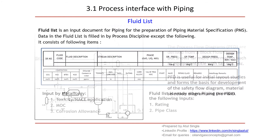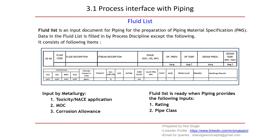Even process has only these BFDs before developing the P&IDs, so this is a very important document used in the initial stage of the project. The fluid list is another important document — it is an input document for piping for the preparation of piping material specifications (PMS). To start developing PMS, the first document is the fluid list. Data is filled in by process discipline. If you see this table, the fluid list contains: serial number, fluid code, fluid description, stream description, phase, operating temperature and pressure, design temperature and pressure, then composition — CO2, H2S, beta, H2O, chloride content, toxicity, maximum line size, material of construction, rating, and frozen allowance.